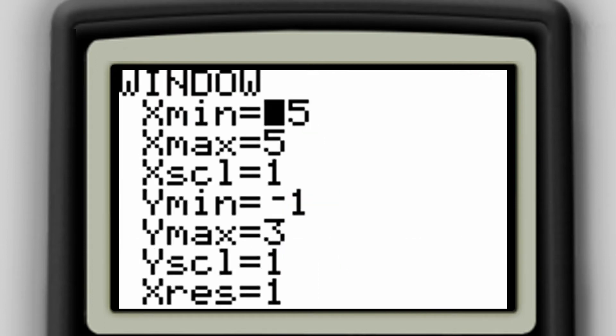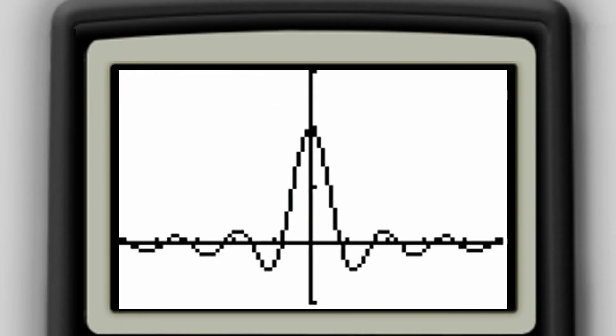Now when you graph this function, a nice window to look at would be from negative 5 to positive 5 with a scale of 1 on the x-axis. And a minimum of y for negative 1, a maximum of 3, and again a scale of 1. So if I change the window for that setup and I look at my graph, the next thing I want to do is hit the trace key.